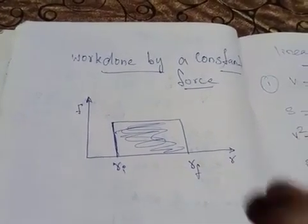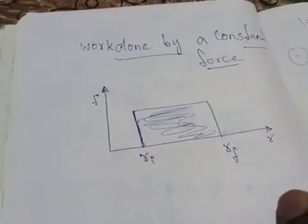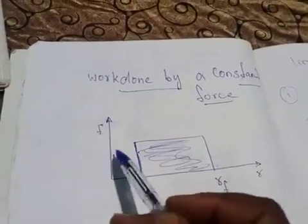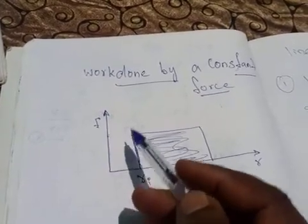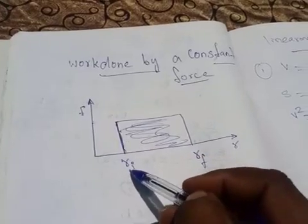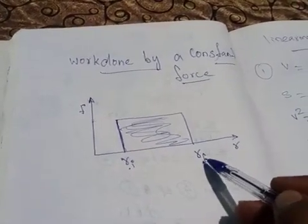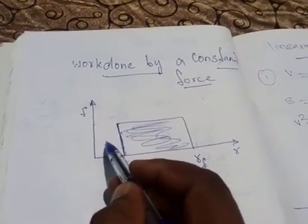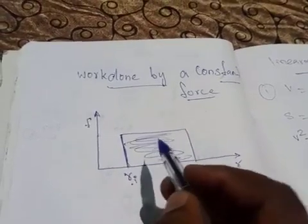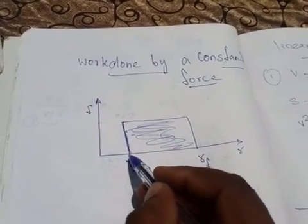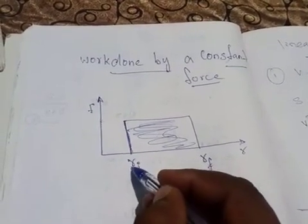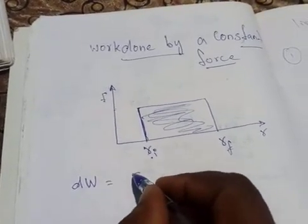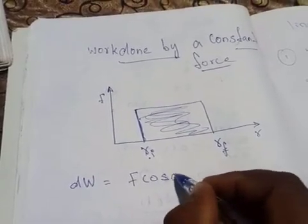Let us discuss about work done by a constant force and work done by a variable force. Assume that an object is here and we are applying a constant force on this object. The object is moving from initial position Ri to final position Rf. There is a small work done dW to move this object, and we know the formula: dW = F cosθ dR.